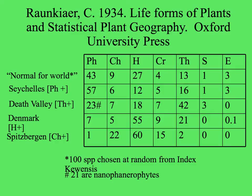Looking at different climate extremes: the Seychelles — tropical islands — have a predominance of phanerophytes and fewer hemicryptophytes. Death Valley, a desert environment, shows a surplus of therophytes, those that have renewal buds in the seeds. Denmark, which is very seasonal and cold in the winter, has a hemicryptophyte surplus, with most plants having renewal buds very close to the surface of the ground.